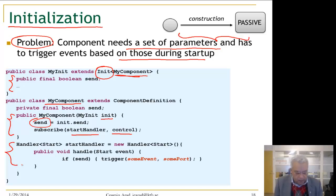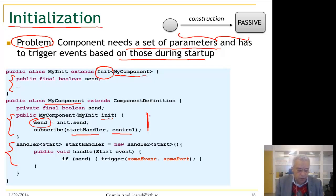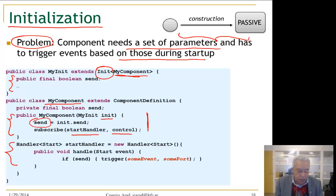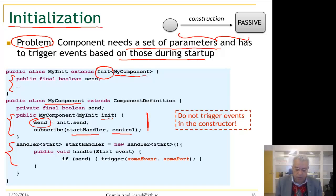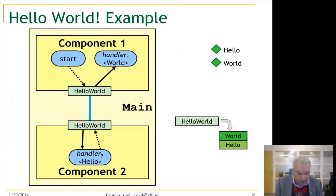The rest of the code is straightforward. You can see the control port, and you always subscribe the start handler to the control port. The most important thing to remember is that in the constructor you should not trigger any events, because all initialization is done while the component is still in a passive state. Do not trigger events in the constructor.